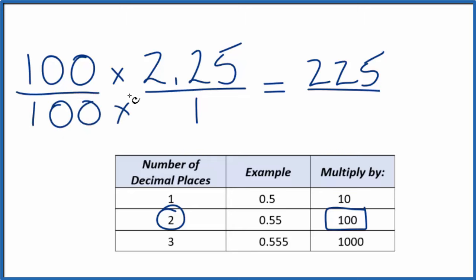And really, 100 over 100, that's just 1. We're multiplying by 1, we're not changing the value, just the way it's represented. 100 times 1, that's 100. And now we have a fraction.